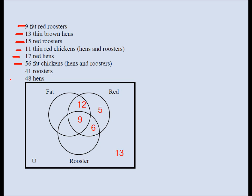48 hens comes in very handy. All regions outside the rooster circle are hens, so those four regions together must equal 48. We have 12, 5, and 13 already placed outside the rooster circle. So: 48 minus 12 minus 5 minus 13 equals 18. That value of 18 goes in the fat brown hens region.